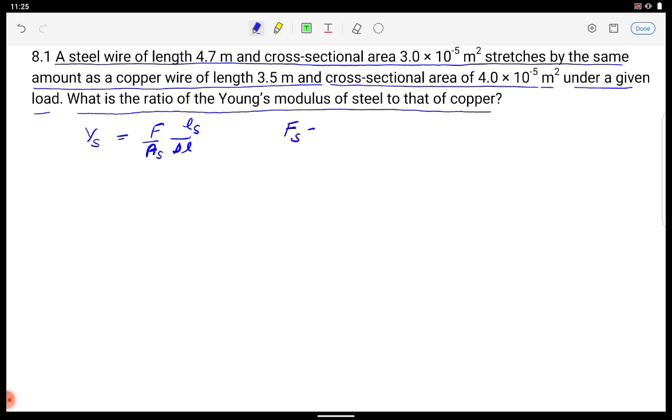F दोनों के लिए जो steel के लिए लग रहा है वही copper के लग रहा है और यहां पर लिखा हुआ है कि stretched by the same amount यही डेल S जो steel का है वही हमारे पास copper का है इसलिए मैं दोनों को डेल L और डेल S मान कर चल रहा हूँ. ठीक है?